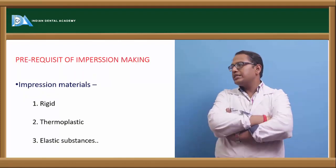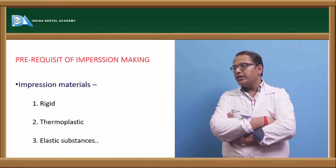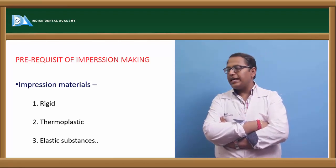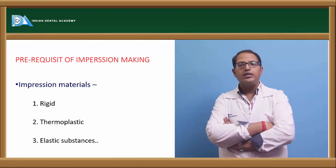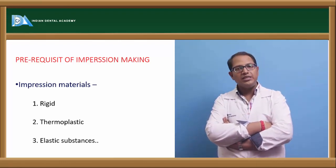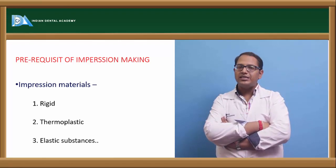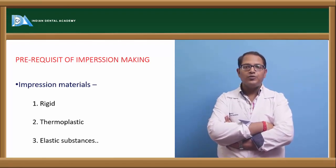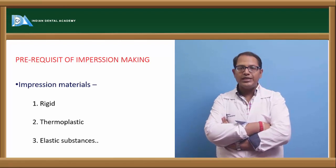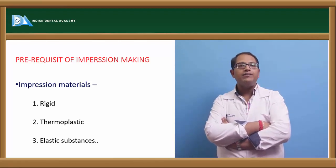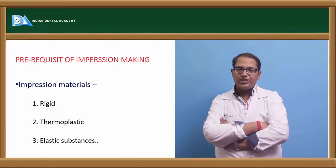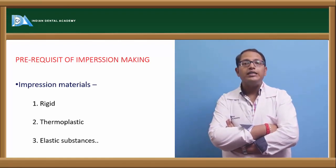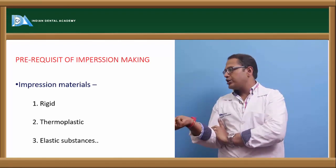What are the prerequisites of impression making? The impression material should be rigid; it can be thermoplastic or elastic. The prerequisite for any impression material remains the same: it should be easy to manipulate, biocompatible, and flowable before introducing into the oral cavity. It should set fast in the oral cavity, with no dimensional changes and no distortion thereafter.